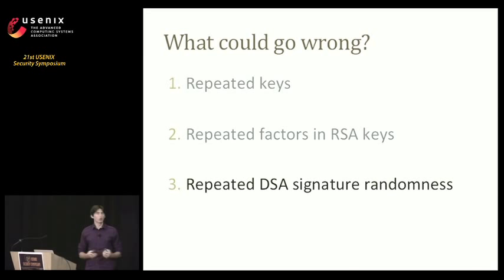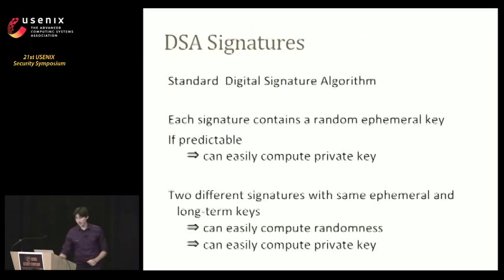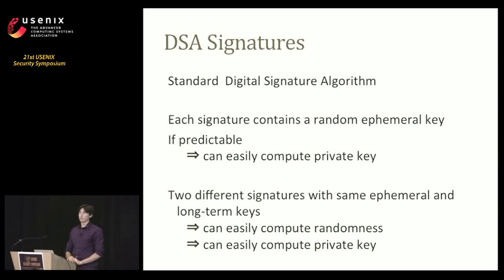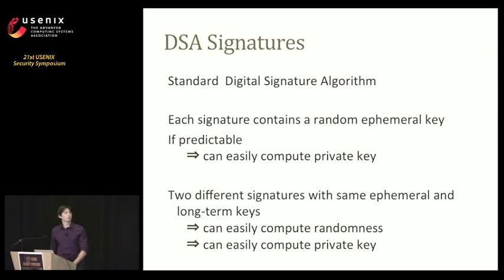We also looked at DSA keys, since most SSH hosts were serving DSA along with RSA. DSA is the U.S. government's federal digital signature algorithm, and it has two properties that make it vulnerable to poorly generated keys. First, if an adversary can guess the randomness used to generate a signature, they can compute the private key. Second, if the same randomness is used to generate two different messages, it's possible to compute that randomness. Put together: if a machine signs two different messages with the same randomness, we can trivially compute its private key.